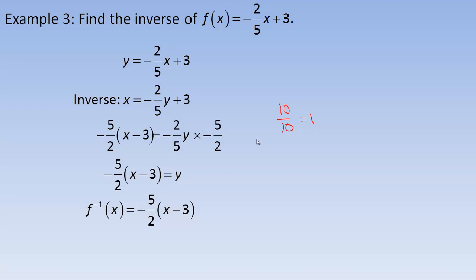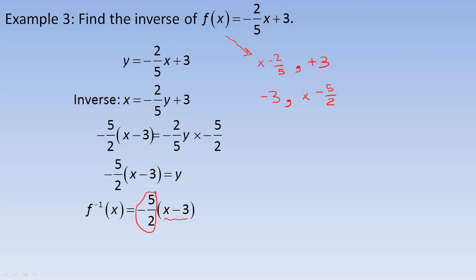You can verify this is the inverse by checking the operations. The original function multiplies by -2/5 first, then adds 3. The inverse should subtract 3 first — and it does: there's x - 3. Then it multiplies by -5/2, which is the opposite of multiplying by -2/5. So you can look at the equation and see the inverse operations as a way to check. That's the end of the tutorial.